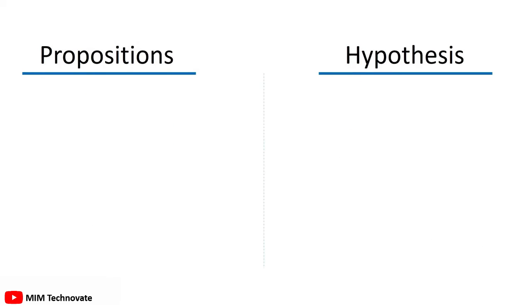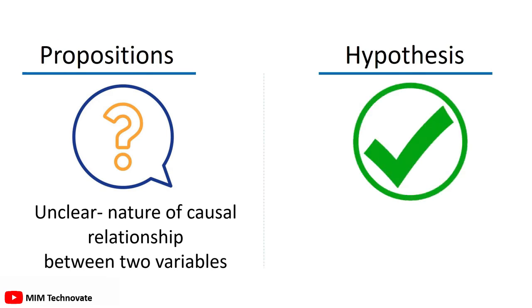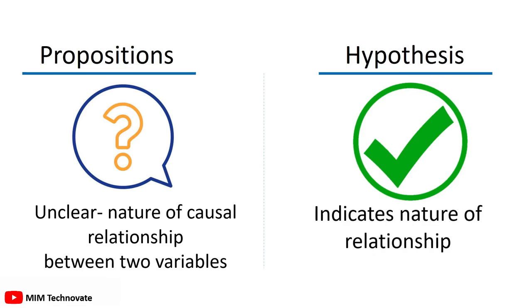In a proposition, it is unclear about the nature of the causal relationship between two variables or concepts. On the other hand, the hypothesis indicates the nature of the relationship — sometimes the direction of the relationship — concerning the target variable.